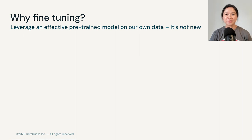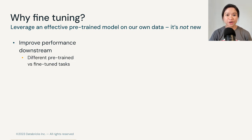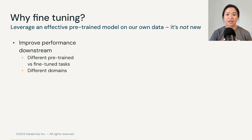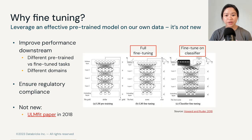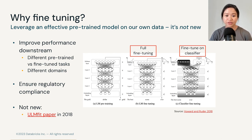Why fine-tuning? We want to have better performance in a downstream task. We can fine-tune a specific pre-trained language model on task-specific data, adapting to a specific style and vocabulary. This can also help us achieve regulatory compliance as well. But this idea is not new at all. In fact, in 2018, Jeremy Howard and Sebastian Ruder published a paper on fine-tuning techniques that we can use for any NLP task. One of them is to fine-tune a classifier layer on a target task by gradually unfreezing layers. To put it simply, fine-tuning means we are updating model weights or model parameters.